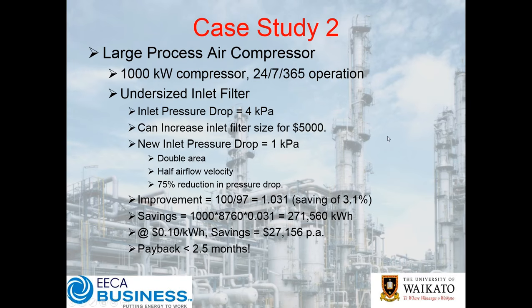So here's a second case study: a large process air compressor — a megawatt unit running continuously around the clock — has an undersized inlet filter. That was the stock-standard inlet filter with a 4 kPa pressure drop, because it's pulling a lot of air through that filter.